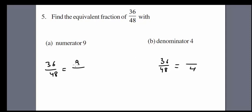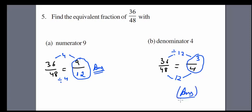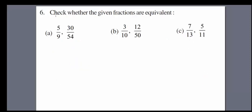Fifth question: find the equivalent fraction of 36 over 48. Write down what is given and find the rest. For the denominator part: 9 times 4 is 36 and 4 times 12 is 48, so the answer is 9 over 12. Next, 12 times 4 is 48 and 12 times 3 is 36, giving 3 over 4. That is how you do these types of questions.